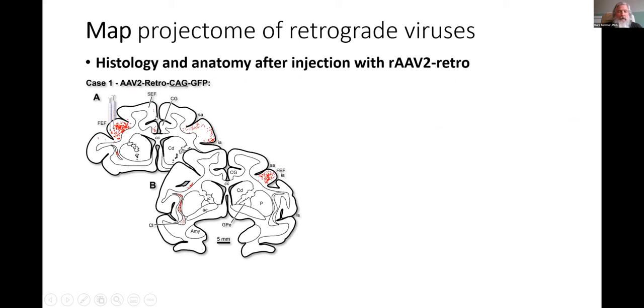An example of data we have from the histology and anatomy looking at the mapping of the projections. This is a case of one monkey. We injected rAAV2-retro into the frontal eye field using the CAG promoter. We do see labeled projection neurons in many different brain areas. For example, in the contralateral frontal eye field labeled really well. Some other brain areas like the claustrum also were labeled nicely and a little bit in areas like the supplementary eye field.